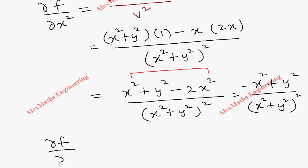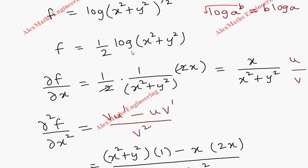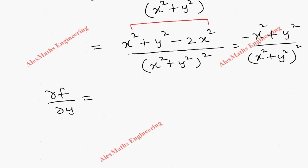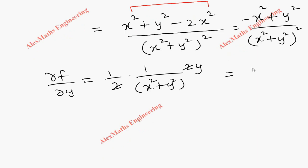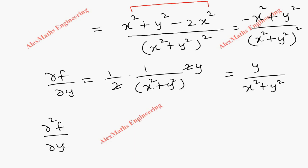In the same way, we have to find ∂f/∂y. When differentiating with respect to y, x is treated as a constant. We write half as it is, differentiation of log gives 1/(x²+y²), and since x is constant its derivative does not appear; the differentiation with respect to y gives 2y. Cancelling the 2s, we are left with y/(x²+y²).